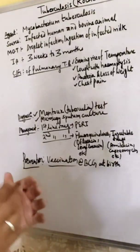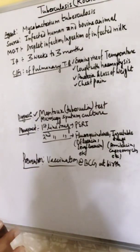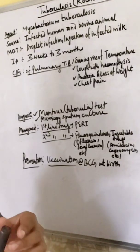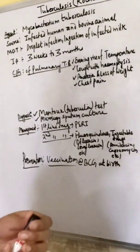TB occurs in man as well as in animals. Those TB occurring in animals, we call it bovine TB.